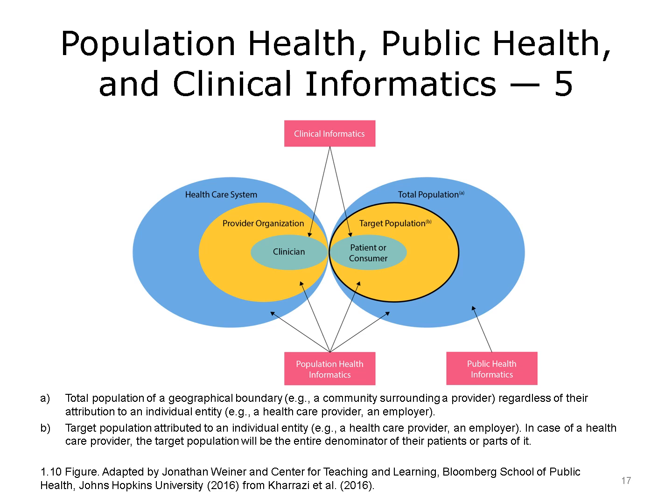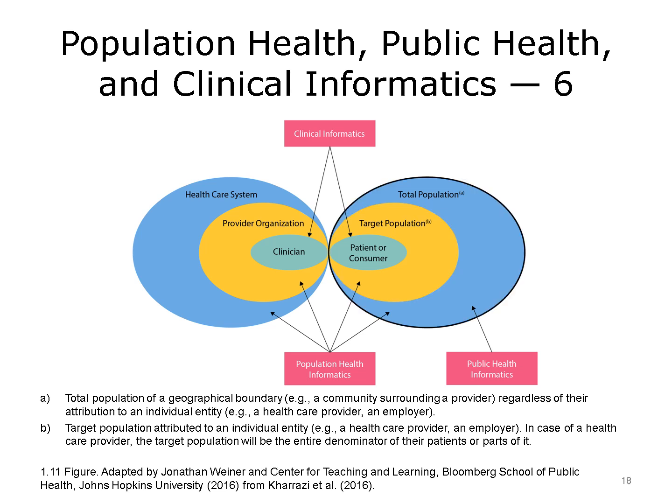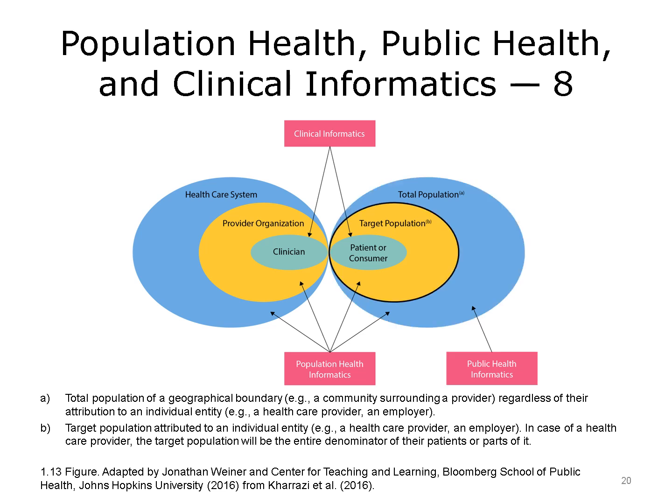The consumer is part of a population of interest signified by the second oval on the right. This could be all those consumers cared for by a large group practice of doctors, or an HMO, or those with a certain disease. This cohort and all other persons are part of some total population, such as those residing in a city or state, as represented by the third oval on the right. The field of public health informatics, as represented by the box on the right, has traditionally focused on this entire cohort of persons, usually defined geographically. In the U.S., no provider or insurance company serves this entire cohort, thus the need for the second inter-targeted population oval.